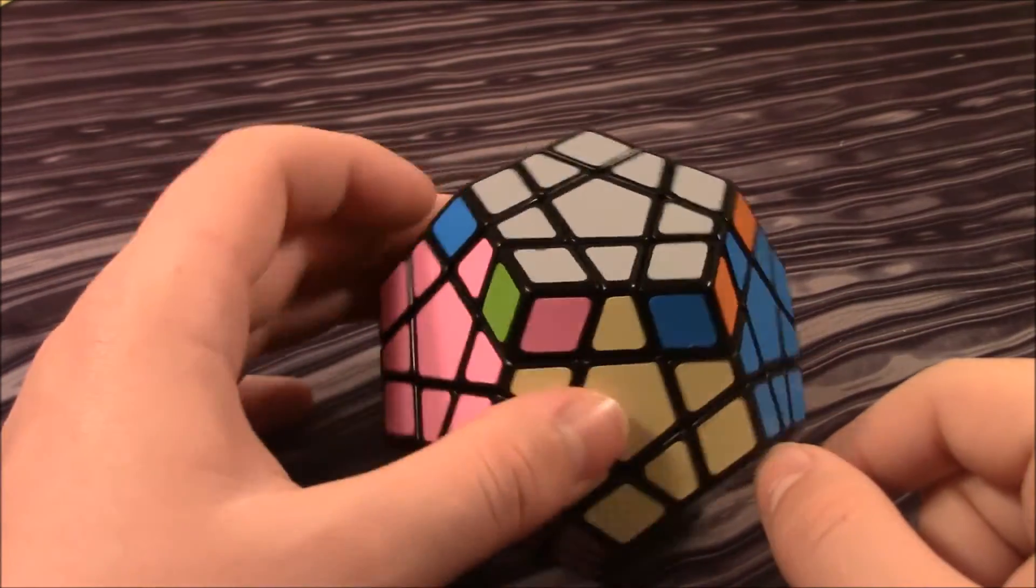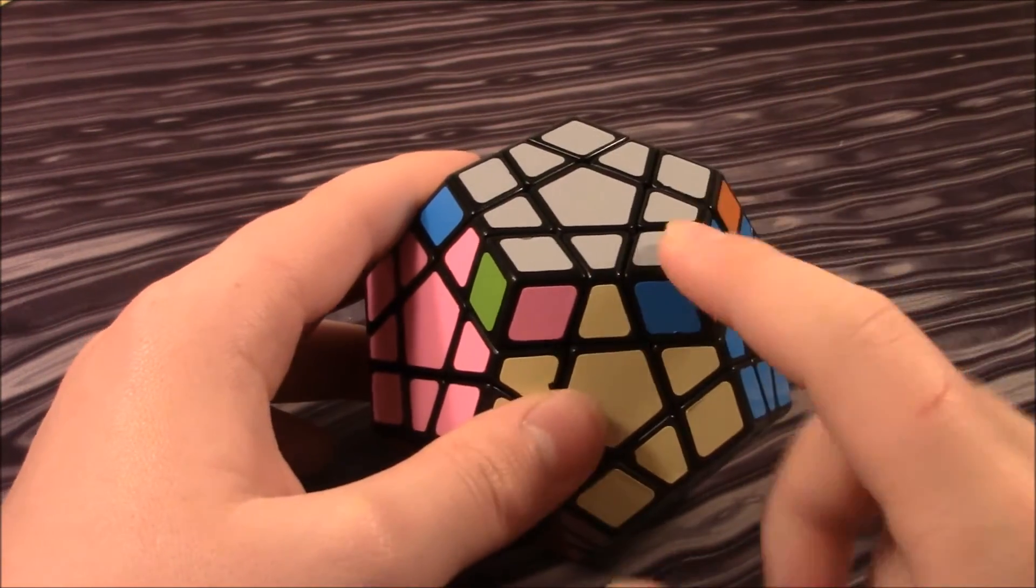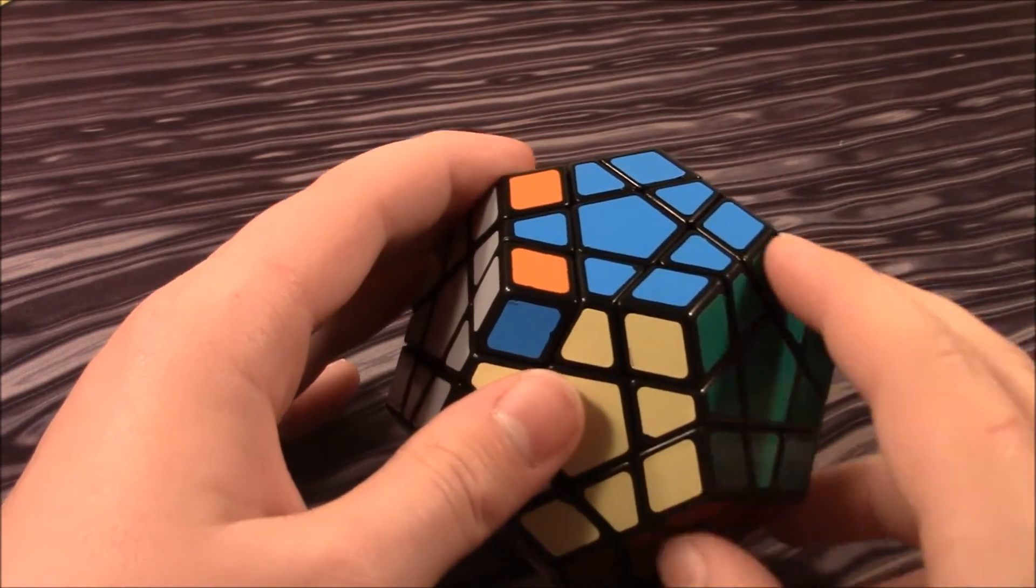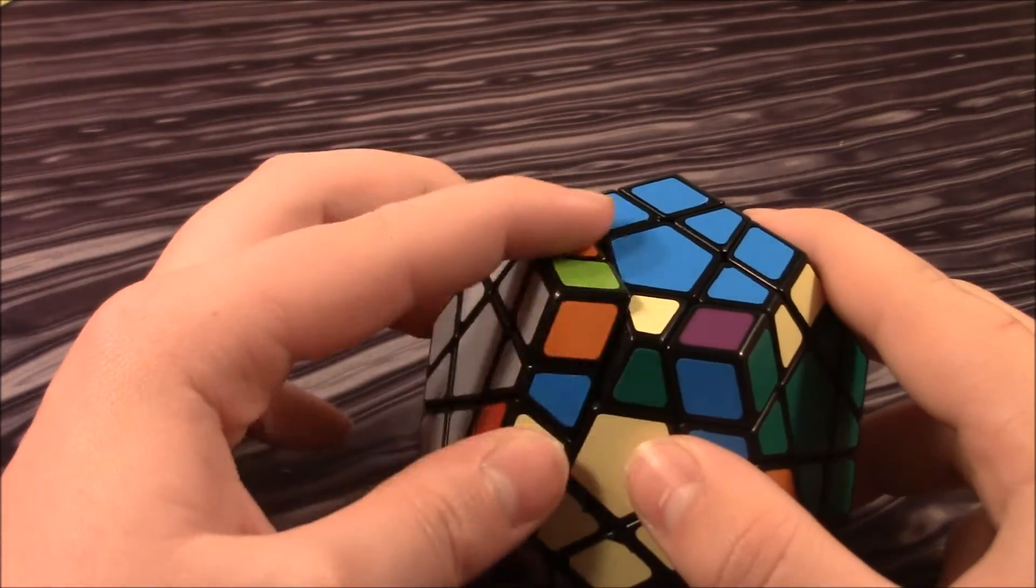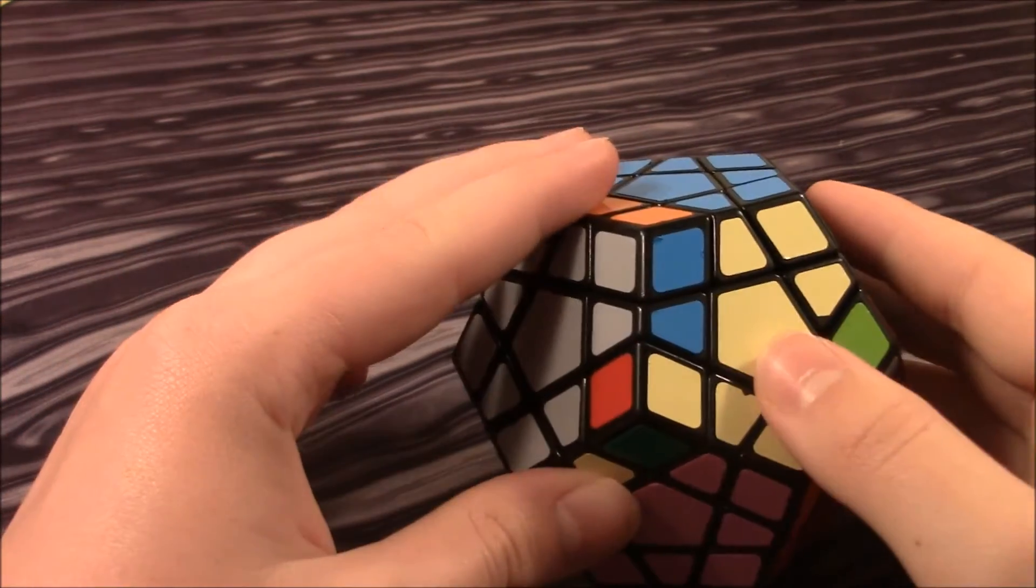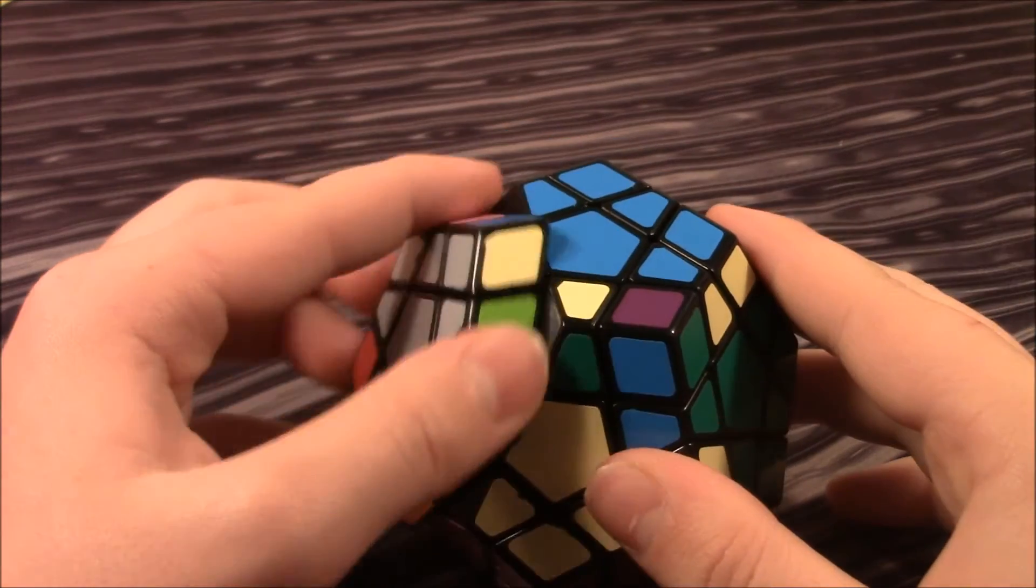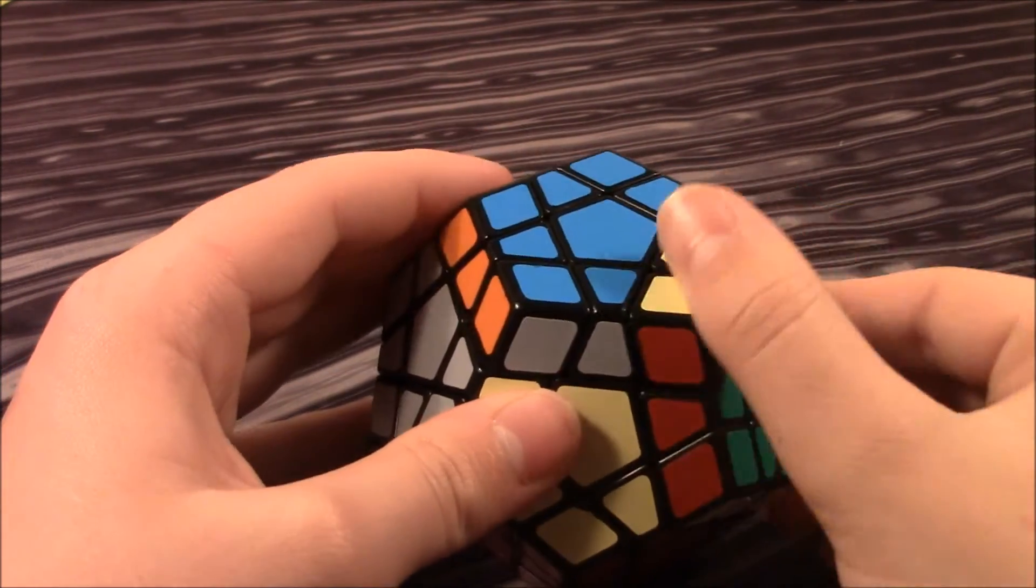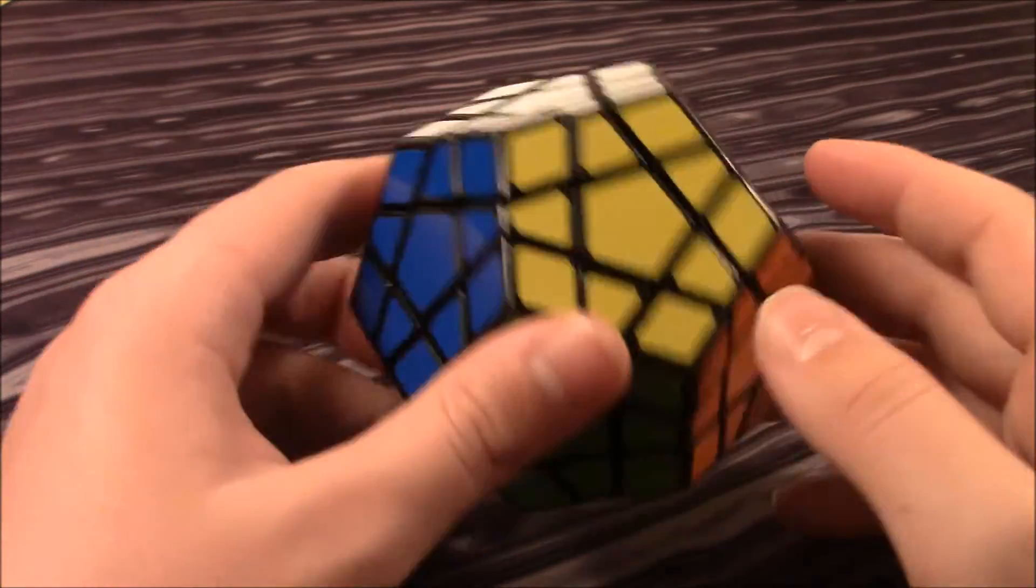Now this part is when we permute the corners. So we need to switch around all these corners. Now you do pretty much the same thing. You put this on the left. You do sexy move. You see what corner this goes, where this corner goes. Goes right here. And then to place it there, you do reverse sexy move. And this corner goes right here. So now you're going to do sexy move again. And this corner goes right here. Reverse sexy move. Sexy move again. And then reverse. And that is all that you need to know to solve the Megaminx.